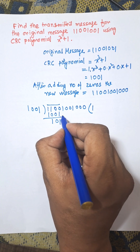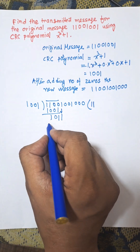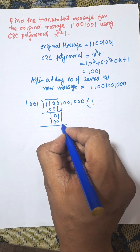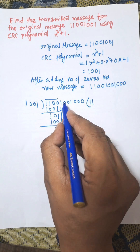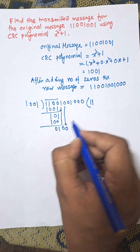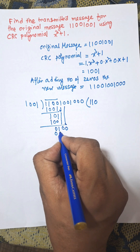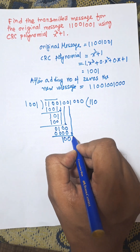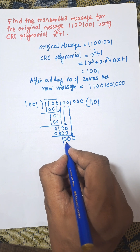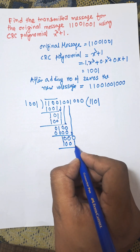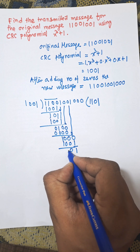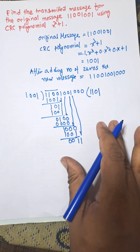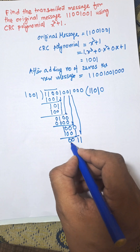Now bring down the next bit, which is 1, so we use 1001. After XOR: 1100. Next, bring down 0 — since it is 0, we multiply by 0, giving 0000. XOR gives 001. Then bring down the next 0, giving 1100.